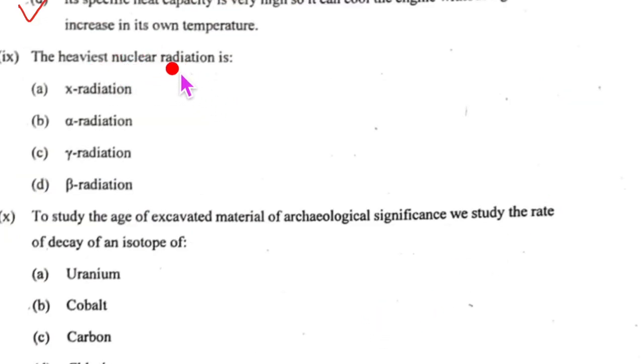Ninth one: the heaviest nuclear radiation is going to be alpha particle, right? That alpha particle means alpha radiation. So the correct option is B.